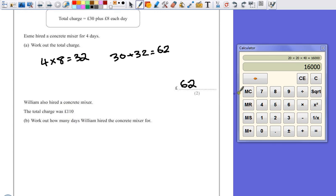Now this just requires us to work backwards a little bit. Now we know that he's paid £110. We also know that there's a standing charge of £30. So if we take that £30 off, what we're left with is £80.